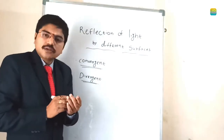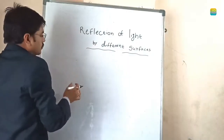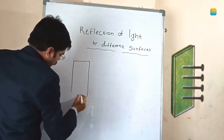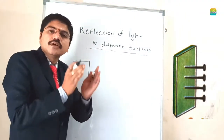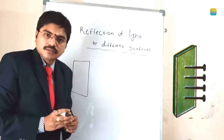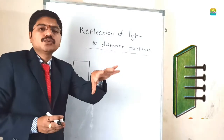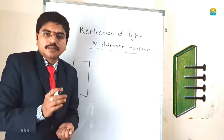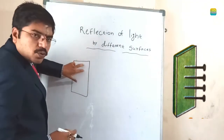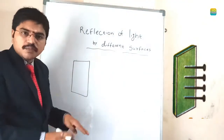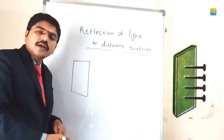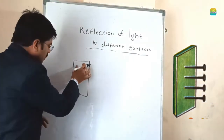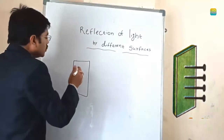For this we have one activity to identify whether it is convergent or divergent. We can do an activity and easily identify whether it is convergent or divergent. Take a foam or rubber sheet that looks like a plain mirror. It should be a plain sheet. Then you attach three pins.